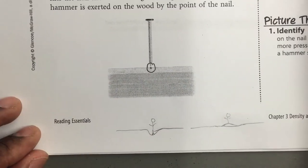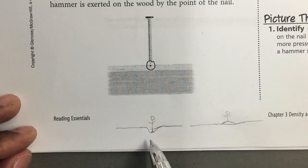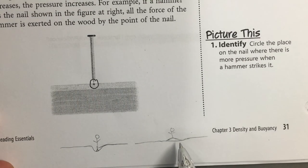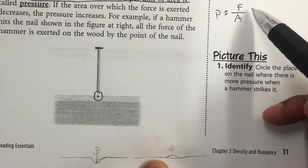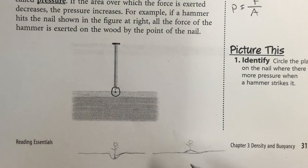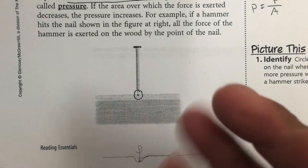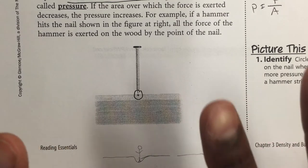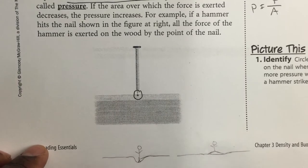Think about jumping on a bed or trampoline. If you stand with your feet close together, the bed sinks down more because all your pressure is in one small area. But if you spread your feet apart, the bed doesn't sink as much because the pressure is spread over a bigger area. That's what we mean by pressure depending on force and area. You may have seen people walk on a bed of nails at a circus — standing on many nails spreads the pressure over the whole foot, but one nail concentrates it all in one spot and goes right through.